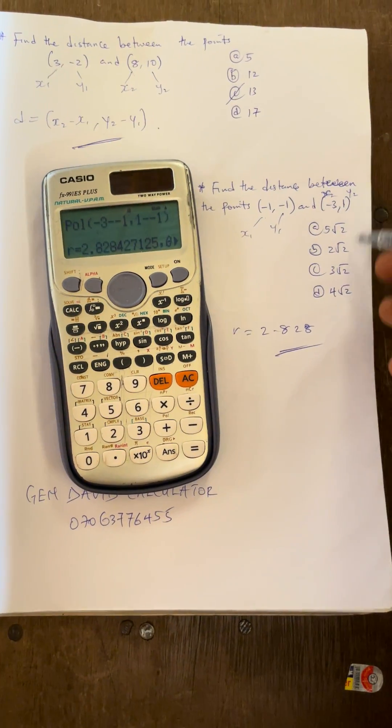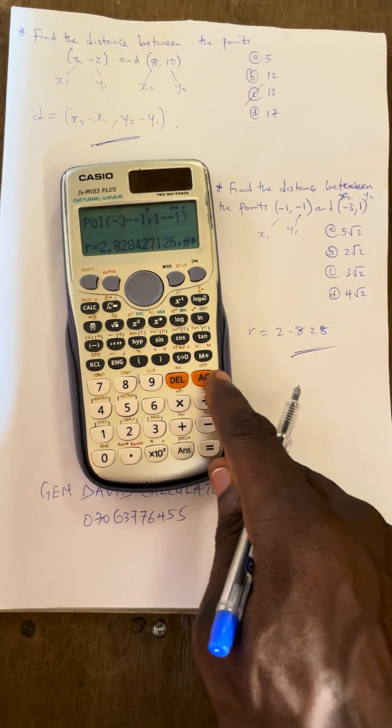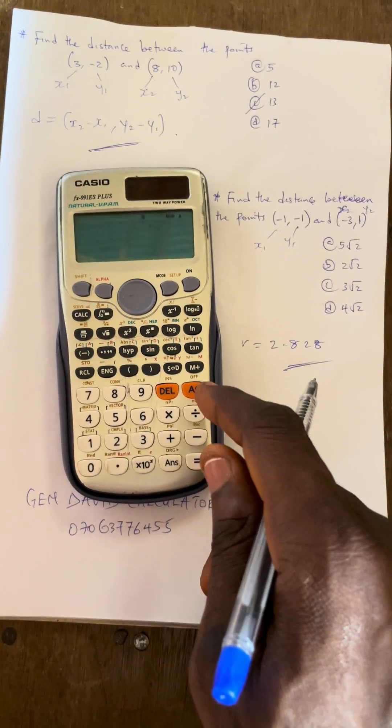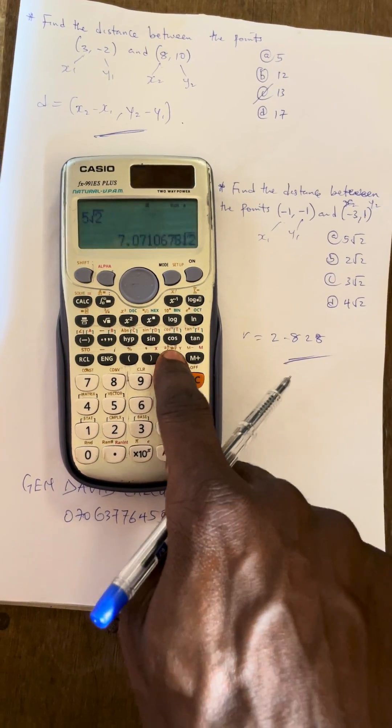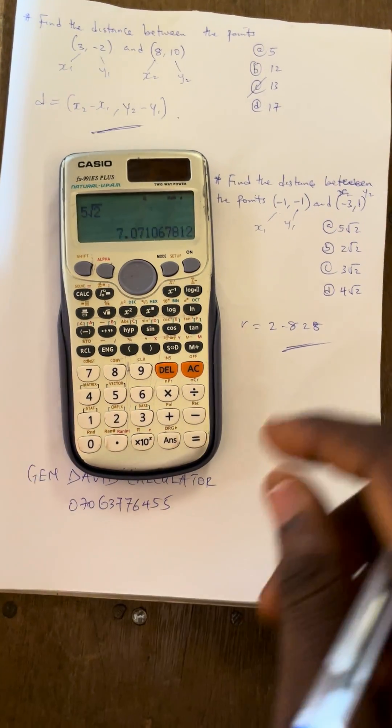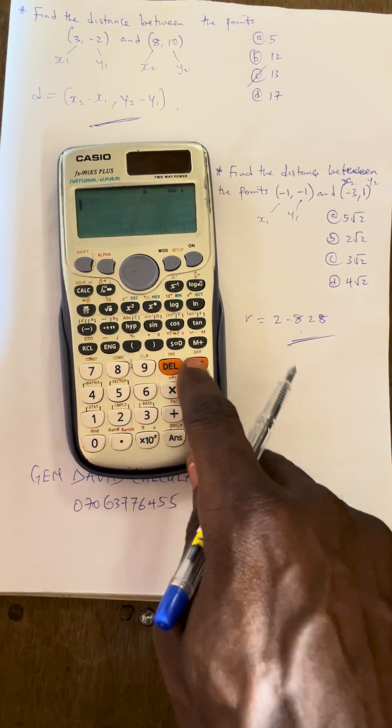Let us check the option that will give us 2.82 here. When you press AC, let us observe the first option, 5 root 2. 5 root 2, when you express it in decimal, is 7.07, which is not the same thing with this. So press AC.